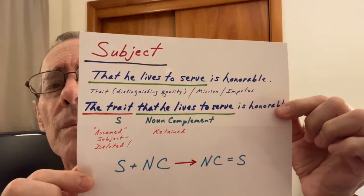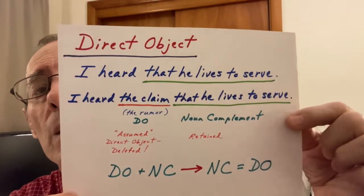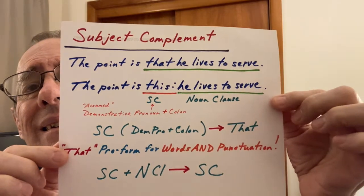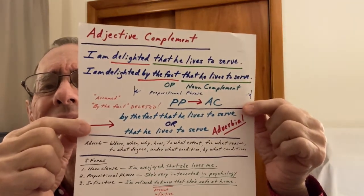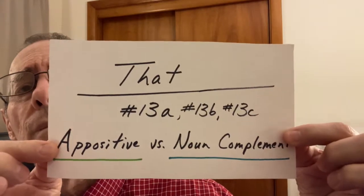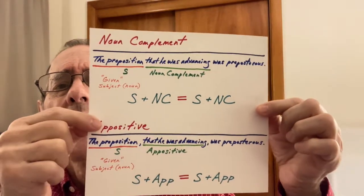I discussed each function in detail: subject, direct object, subject complement. Adjective complement — that's a tricky one, which we'll discuss shortly. And then in videos 13A, 13B, and 13C, I discussed at length the two other sentence functions of the 'that' noun clause — noun complement and appositive.